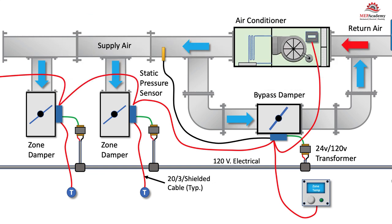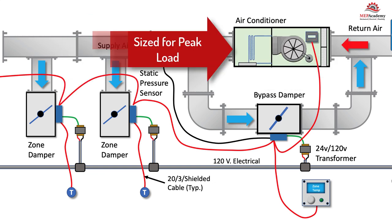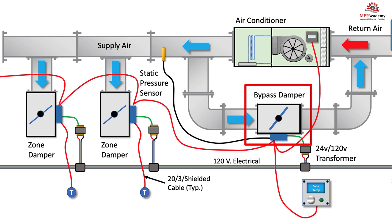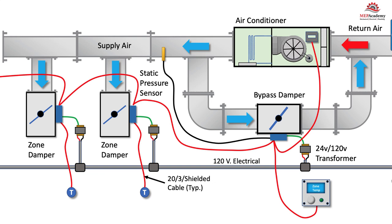The air conditioning unit is sized to handle the peak load, which is only needed a few times a year. The excess air needs to be bypassed and rerouted from the supply back into the return air system. The use of a bypass damper allows for the use of less expensive constant volume units compared to a VAV system. The bypass damper must ensure the constant volume unit receives the minimum amount of airflow required to function properly — if the minimum amount of air is not allowed over the coil, the coil could freeze up.